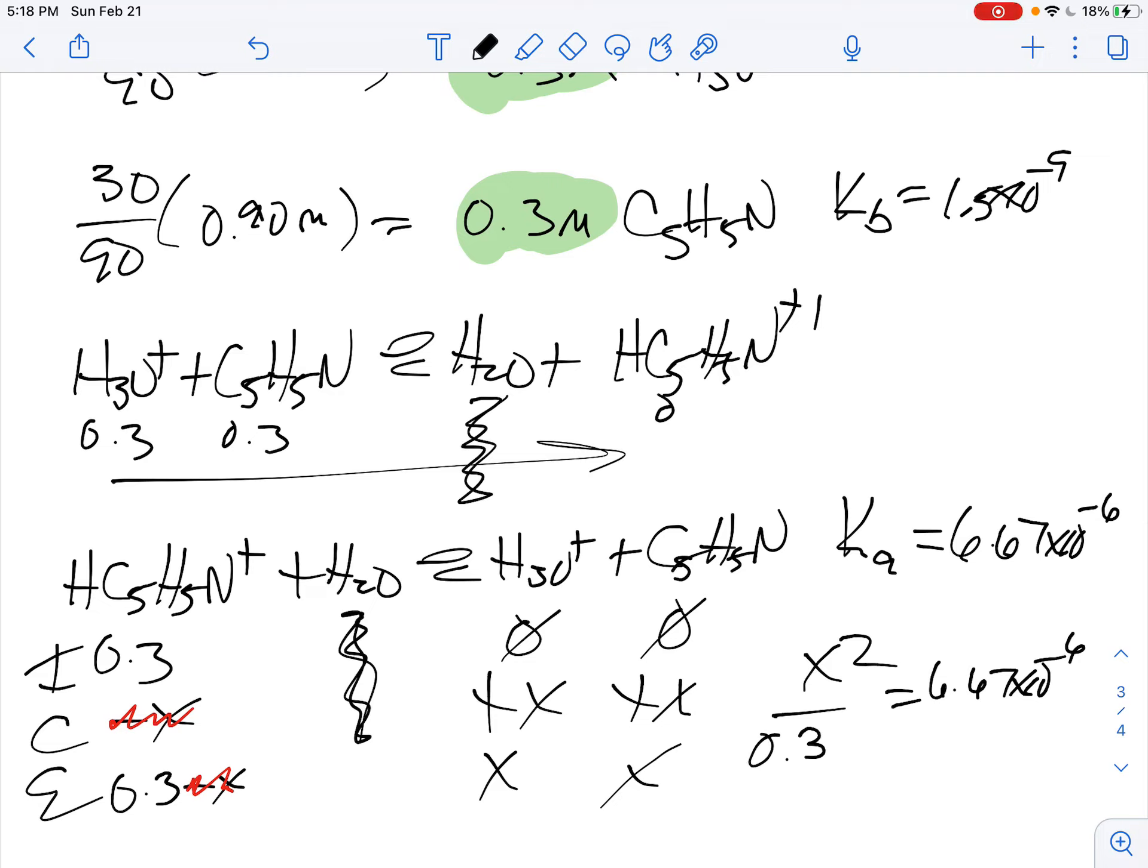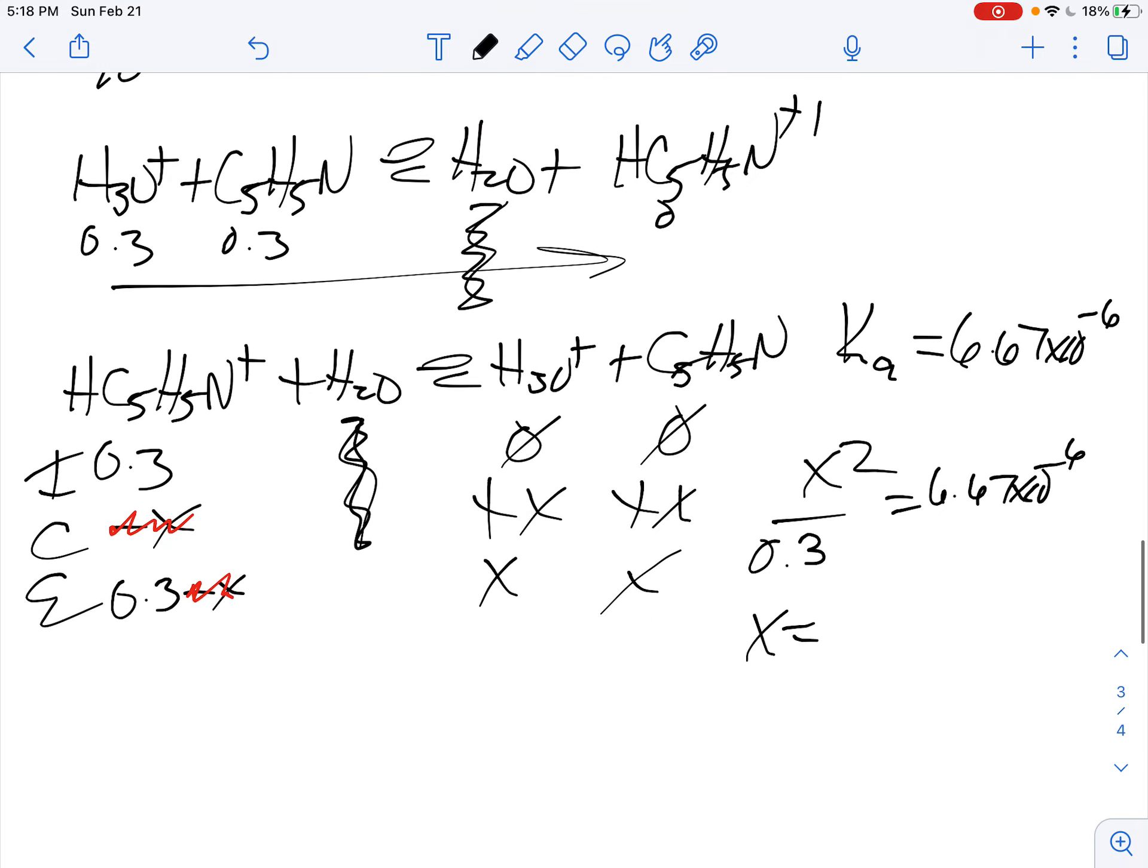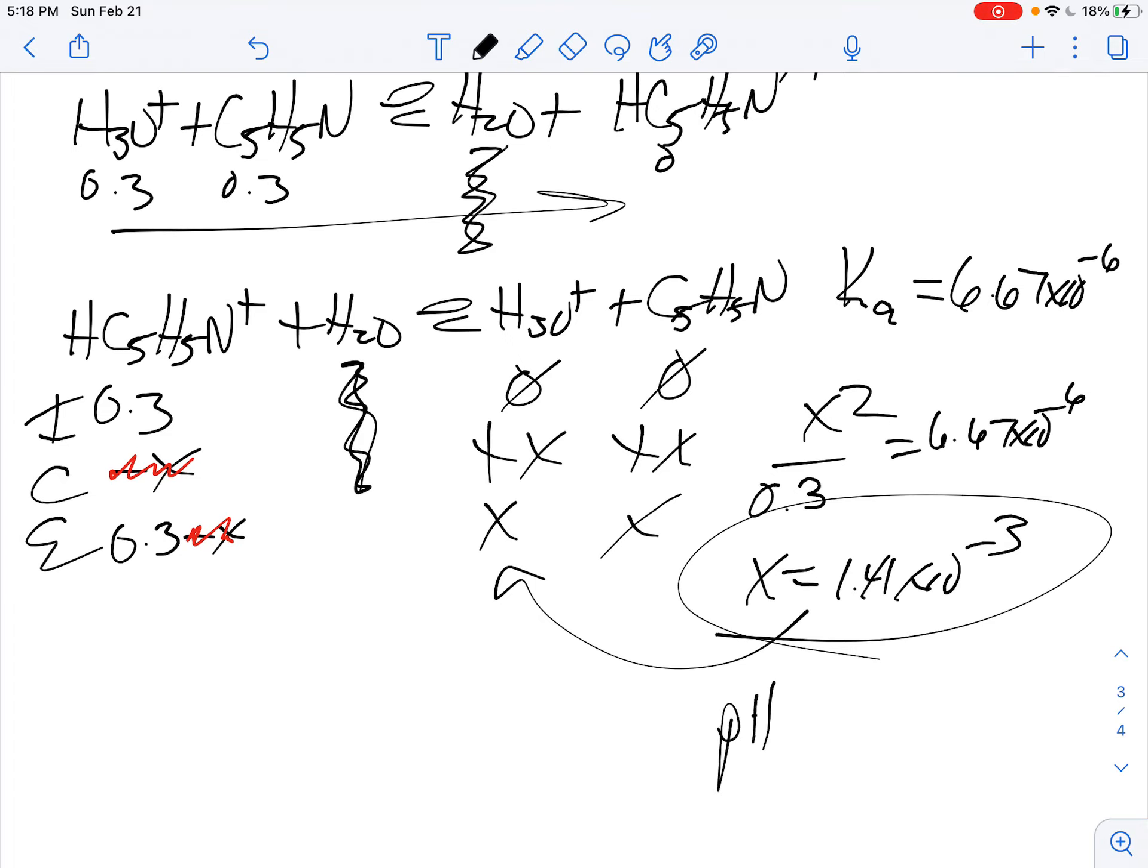Times 0.3, square root it, and we end up then with x equal to 1.41×10^-3. And my x here is indeed straight up equal to H3O+.